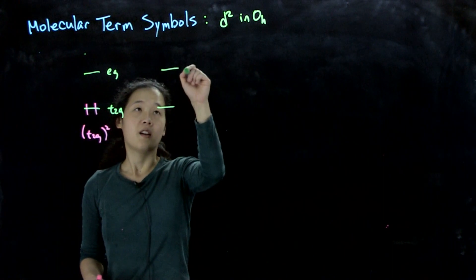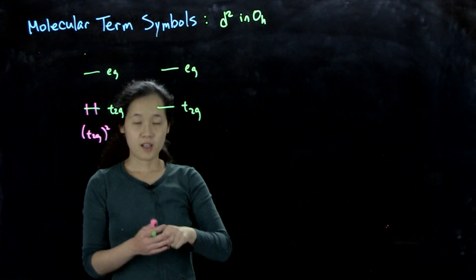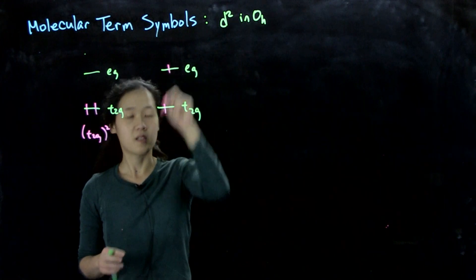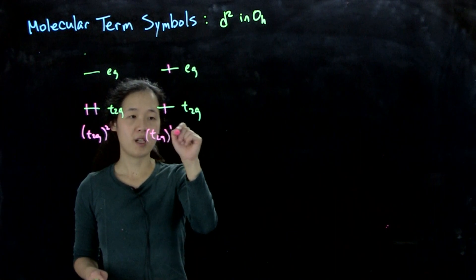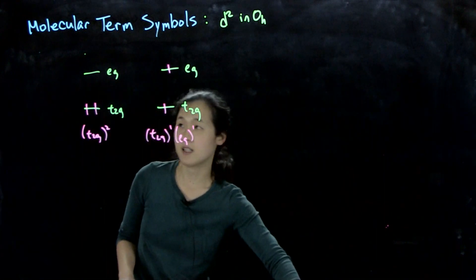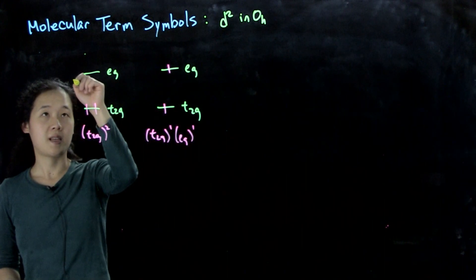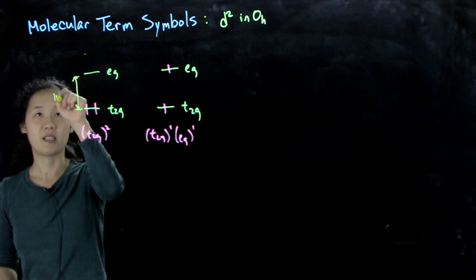We could excite one electron into the eG orbitals. So this would be t2g¹, eG¹. Keep in mind that this ligand field splitting is the same for all three configurations. This splitting is our 10dq.